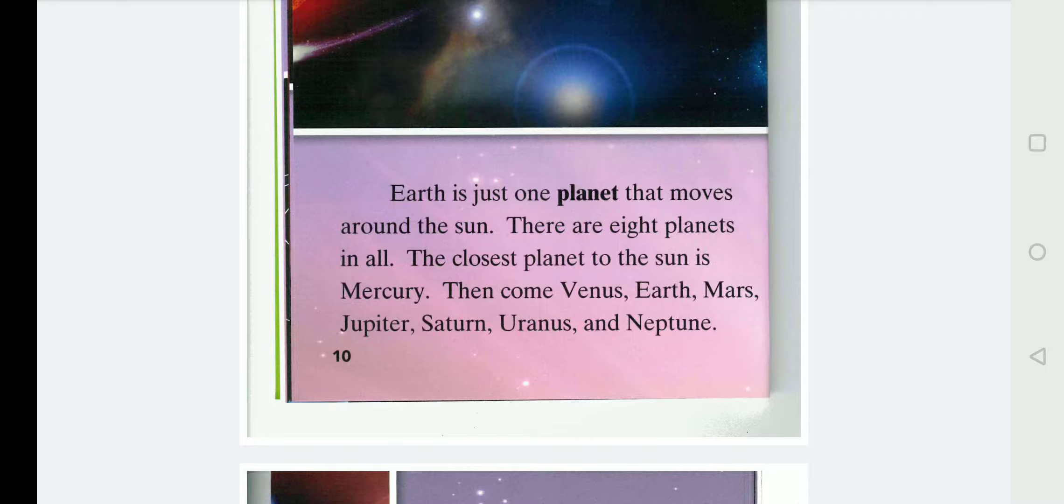Earth is just one planet that moves around the sun. There are eight planets in all. The closest planet to the sun is Mercury. Then comes Venus, Earth, Mars, Jupiter, Saturn, Uranus and Neptune. When I was a child, we also had a planet called Pluto. But now they have removed it out of the solar system.